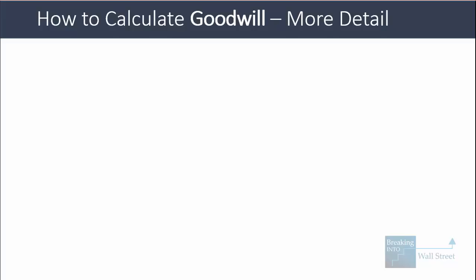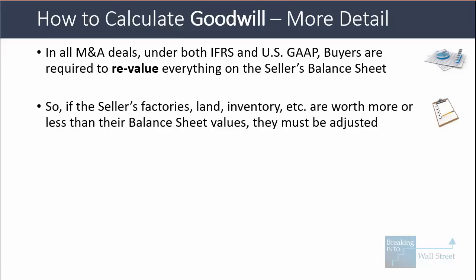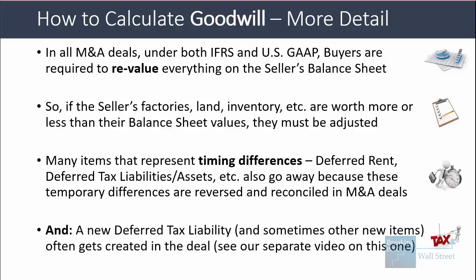Now let's go into more detail. In all M&A deals under both IFRS and US GAAP, buyers must revalue everything on the seller's balance sheets. If the seller has factories, land, or inventory and the fair market value differs from what's on the balance sheet — highly likely for real estate and land — the values must be adjusted when the deal closes. Many items representing timing differences like deferred rent, deferred tax liabilities, and deferred tax assets also go away, because these temporary differences are reversed and reconciled in M&A deals. You will also often get a new deferred tax liability in the deal.